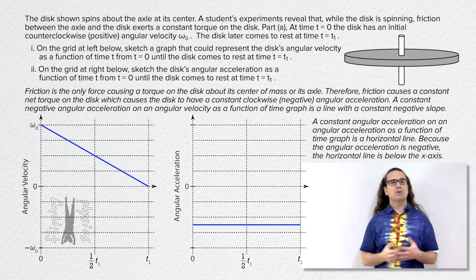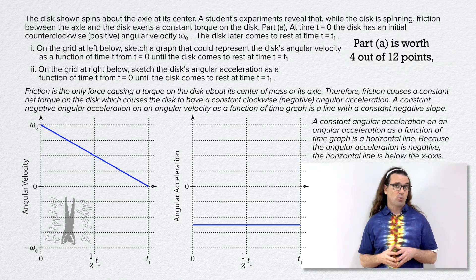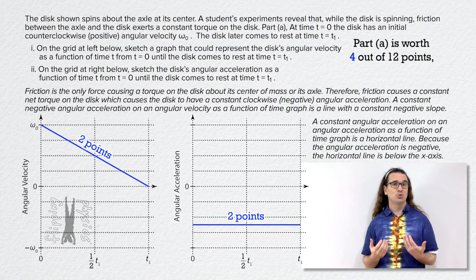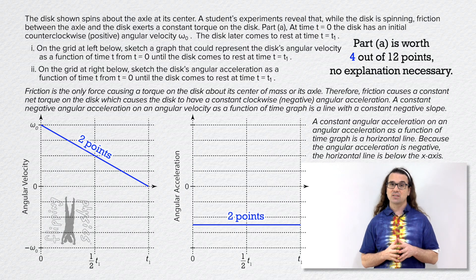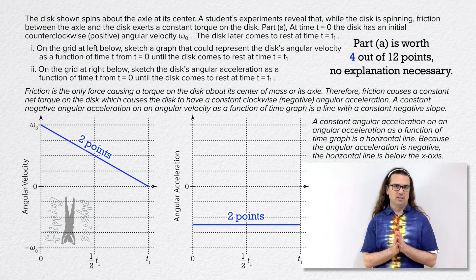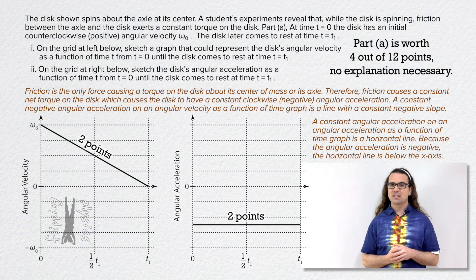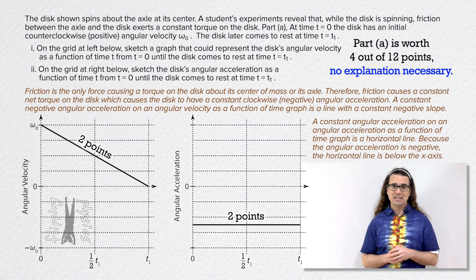Very nice Bobby. A quick point about grading. Part A is worth 4 points out of 12 for this question. One third of the points for this question are for drawing two lines, one on each graph. No explanation necessary. This should highlight the importance of the graphs they ask you to draw. Please draw carefully. I want to point out that Bobby's reasoning behind why he chose to draw the lines the way he did is written on screen. However, none of that is necessary to get all four points for part A. This question does not ask for an explanation, so do not waste your time explaining your answer if the question does not ask you to.